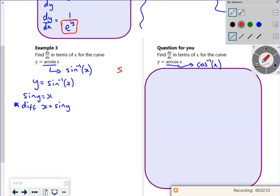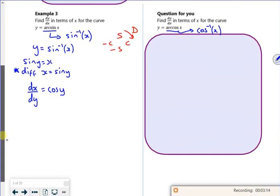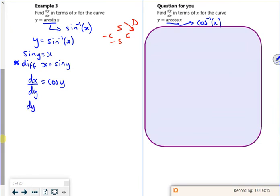So you remember whenever you differentiate sine or cos, always draw the little clock face which I'm convinced I invented but probably didn't. So sine goes to cos. So I want dy/dx in terms of x though. So my dy/dx is 1 over cos y, but at the moment it's in terms of y and I want it in terms of x.